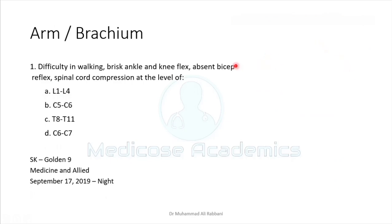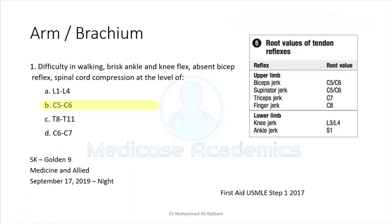Absent biceps reflex indicates a lower motor neuron lesion at that level, while brisk ankle and knee reflexes indicate upper motor neuron type lesion above. You should memorize all deep tendon reflexes and their root values. The biceps reflex is from C5 and C6 — this is the correct answer. You should also know the ankle, knee, supinator, and finger jerk reflexes, as their root values are repetitively asked.